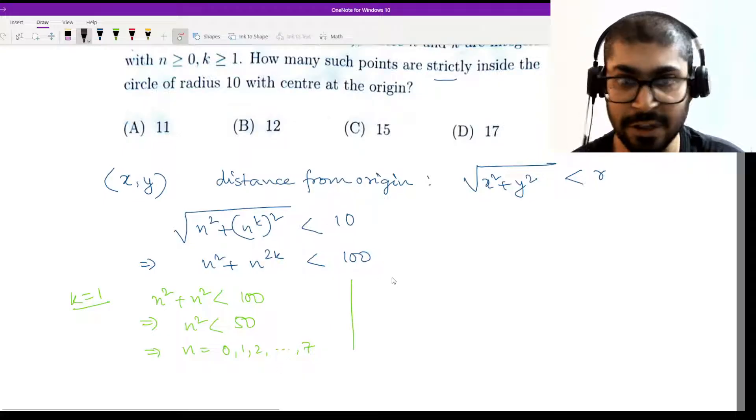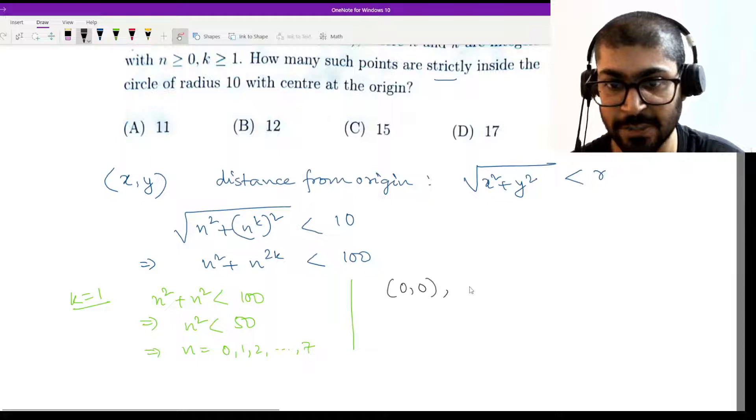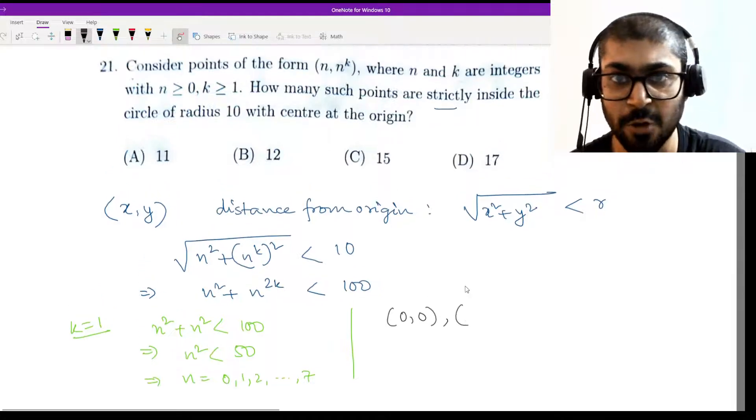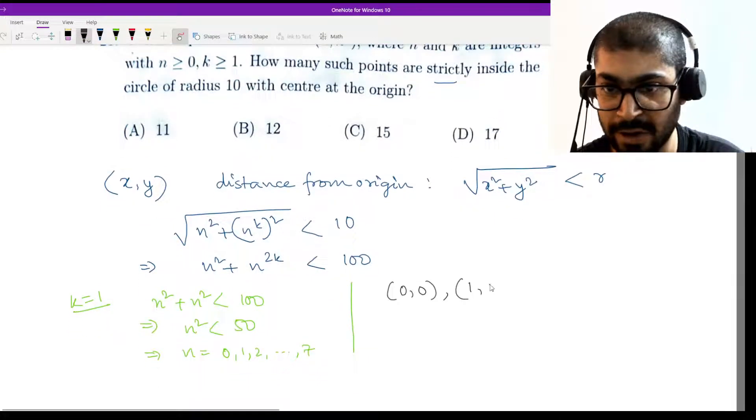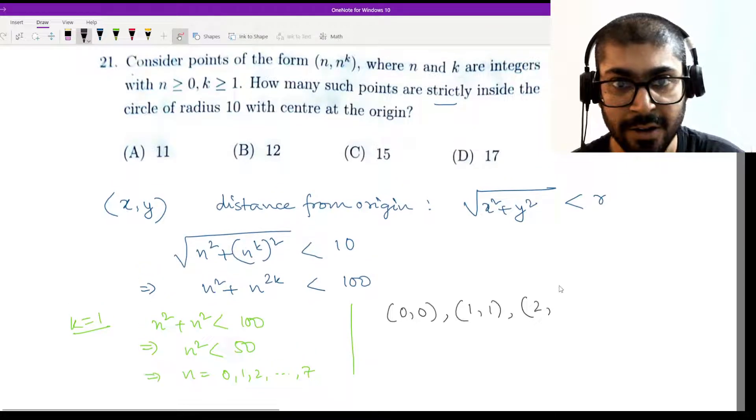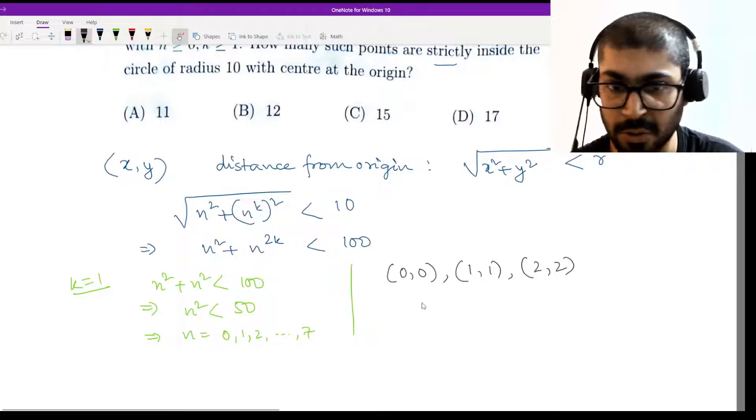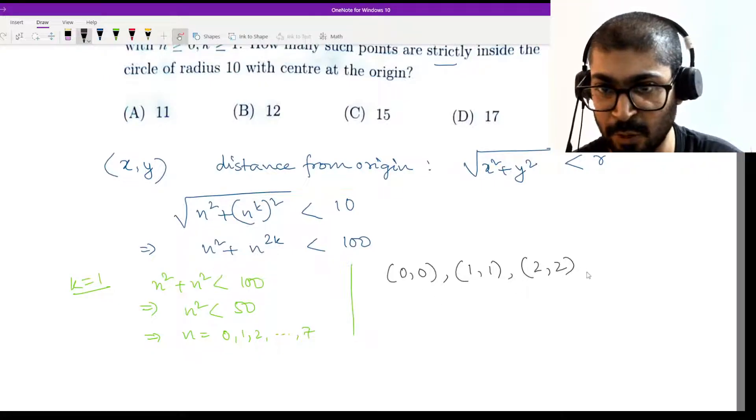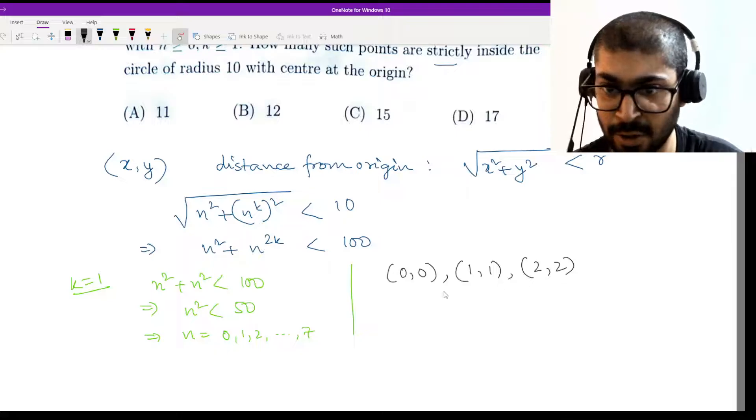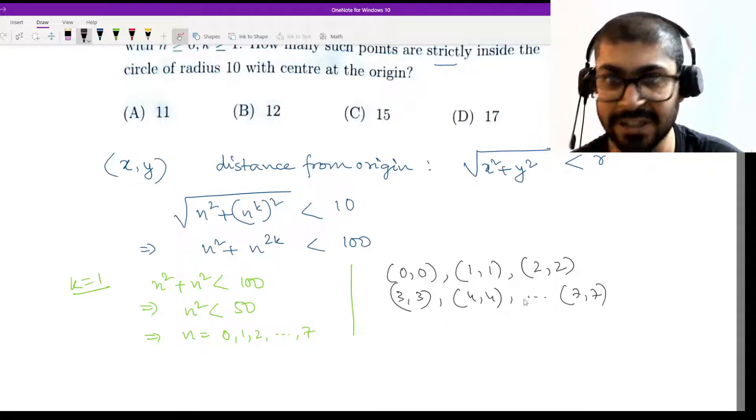What do these points look like? At n equal to 0 the point will be (0,0), that's the origin. At n equal to 1 we would have (1,1). At n equal to 2 we have k is 1, so we are basically going to have all the diagonal points: (2,2), then (3,3), similarly (4,4), and we can do this up to (7,7).